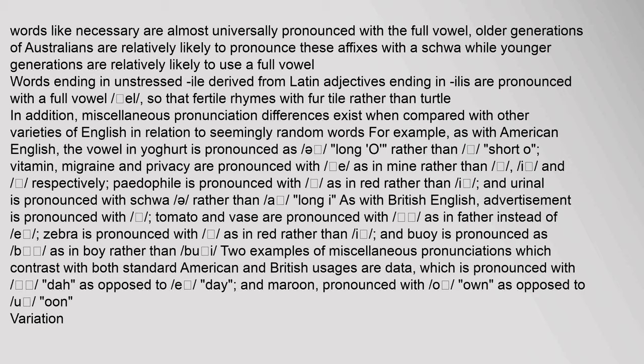As with British English, 'advertisement' is pronounced with stress on the second syllable, and 'tomato' and 'vase' are pronounced with 'a' as in 'father'. 'Zebra' is pronounced with 'e' as in 'red' rather than a long 'i', and 'buoy' is pronounced as 'boy' rather than 'boo-ee'. Two examples of miscellaneous pronunciations contrasting with both American and British usages are 'data', pronounced with 'dah', and 'maroon', pronounced with a long 'o'.